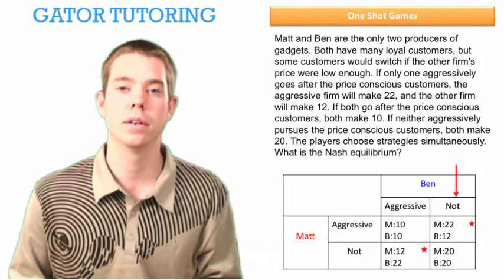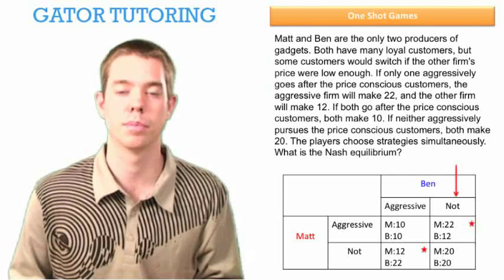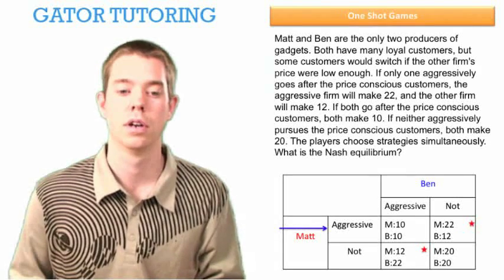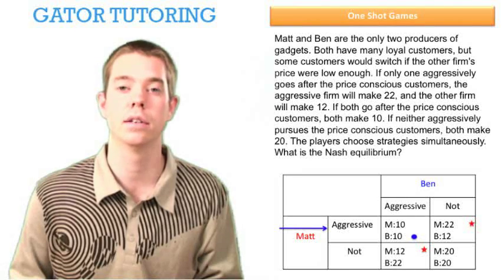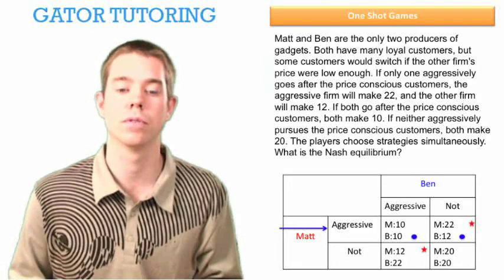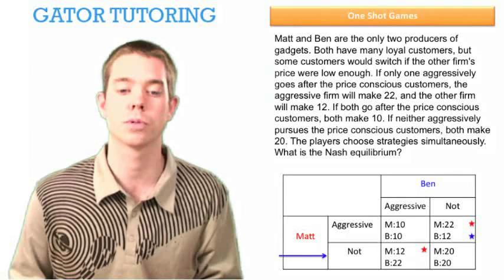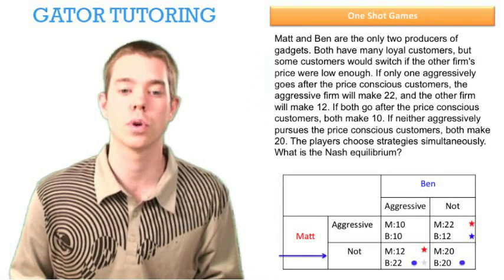Likewise, for Ben we're going to compare across the board — we're going to look at what Matt's choices are. If Matt is aggressive, Ben has a choice between $10 and $12 — he's going to choose $12. And if Matt is not aggressive, Ben has a choice between $22 and $20 — he's going to choose $22.